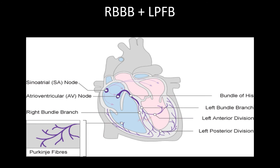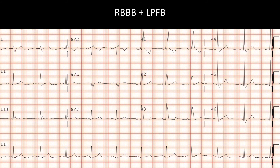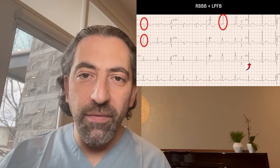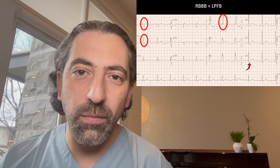Similarly, with right bundle branch block and left posterior fascicular block, conduction proceeds normally down the left anterior fascicle, and then the inferior septum of the left ventricle and the right ventricle both depolarize slowly through muscle-to-muscle conduction. This gives a right bundle branch block pattern in leads V1 and V6 — an RSR' in V1 and a broad S wave in V6 — and also causes right axis deviation, with lead 1 negative and lead 2 positive, a small R in lead 1 and a small Q in lead 2, meeting criteria for both right bundle branch block and left posterior fascicular block simultaneously.